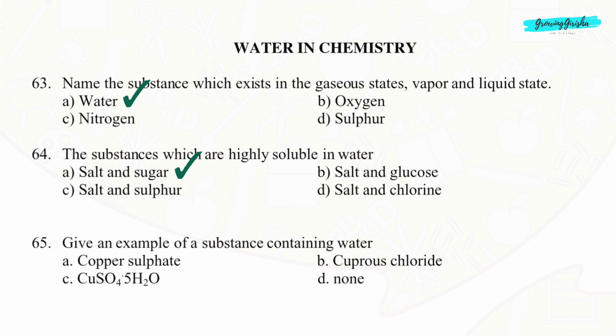Question 65. Give an example of a substance containing water. Option C: Copper sulphate pentahydrate.